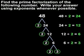Since we have circles at the bottom of all of the branches, we're finished. So the prime factorization of 48 is 2 times 2 times 2 times 2 times 3.